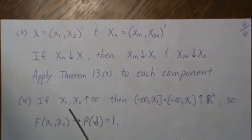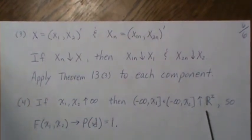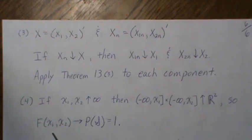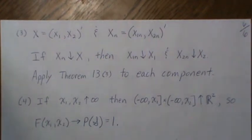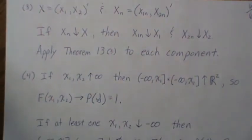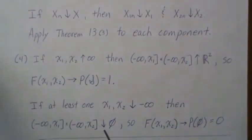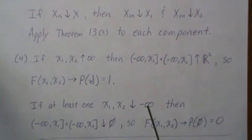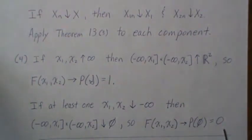If both x1 and x2 go to infinity, the product space increases to the two-dimensional real line, so the probability goes to the probability of the sample space, which is one. If at least one component goes to minus infinity, the set decreases to the empty set, so the probability goes to the probability of the empty set, which is zero.